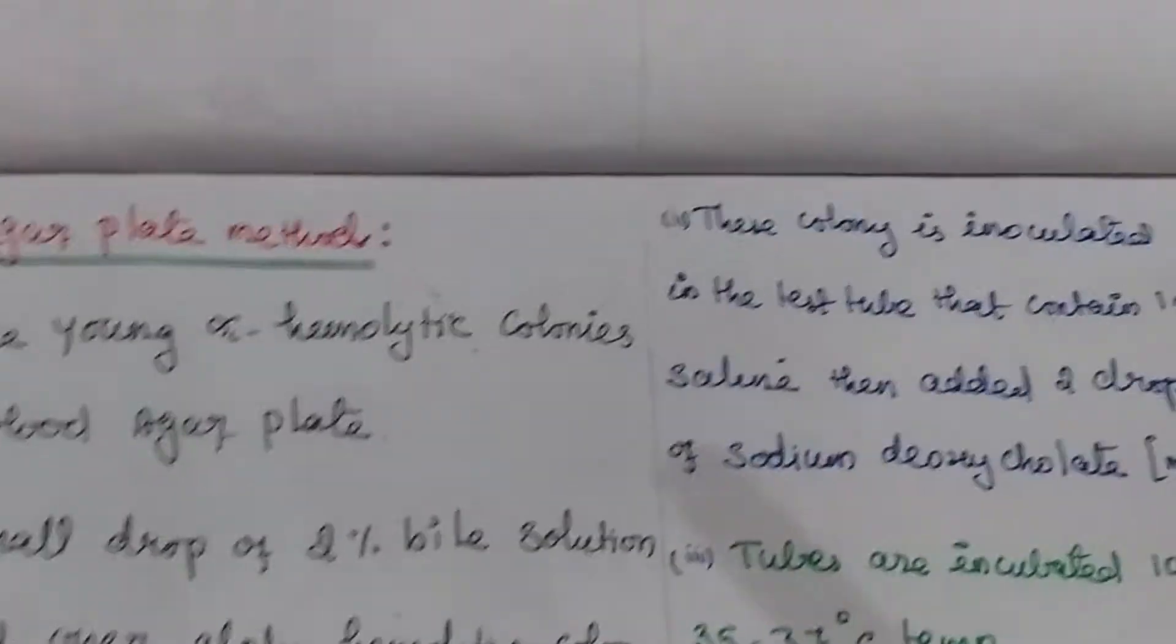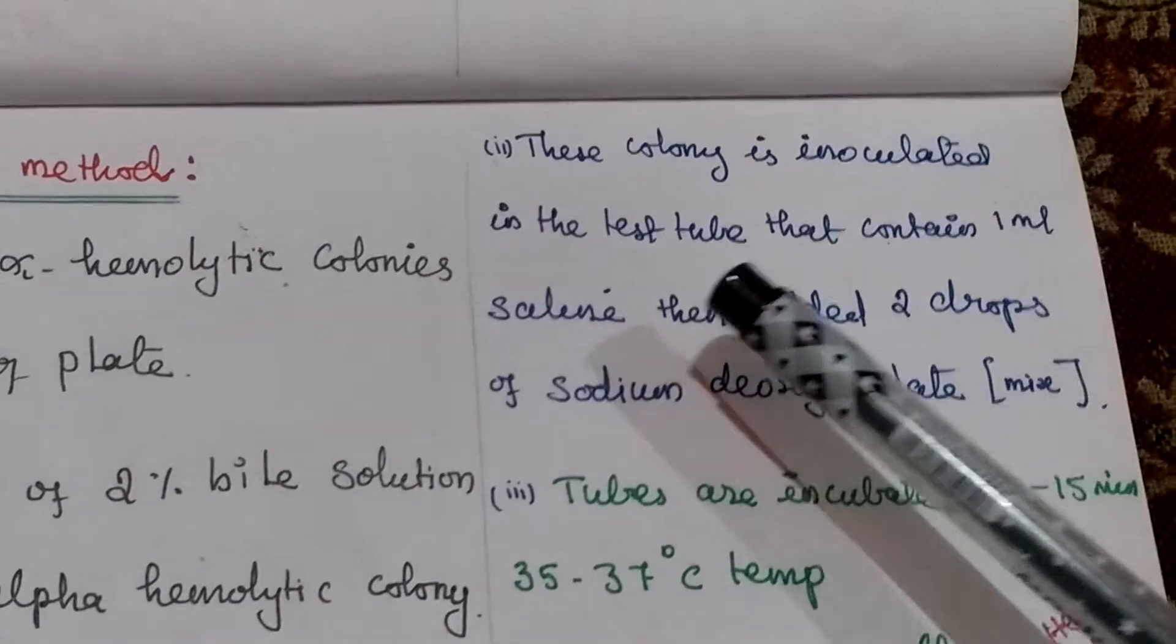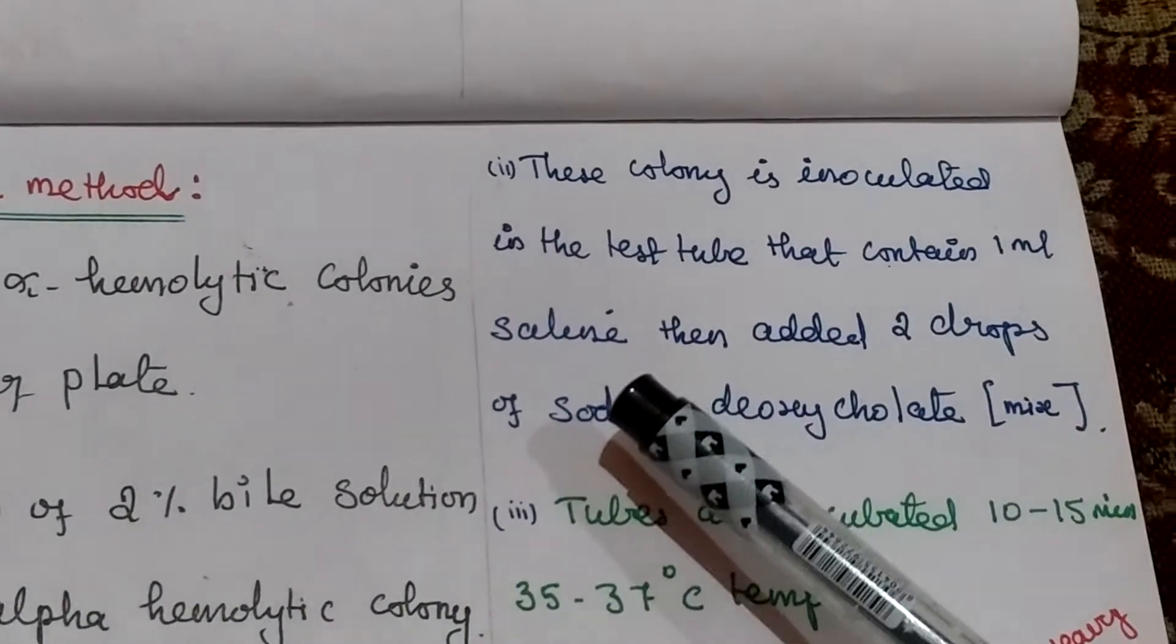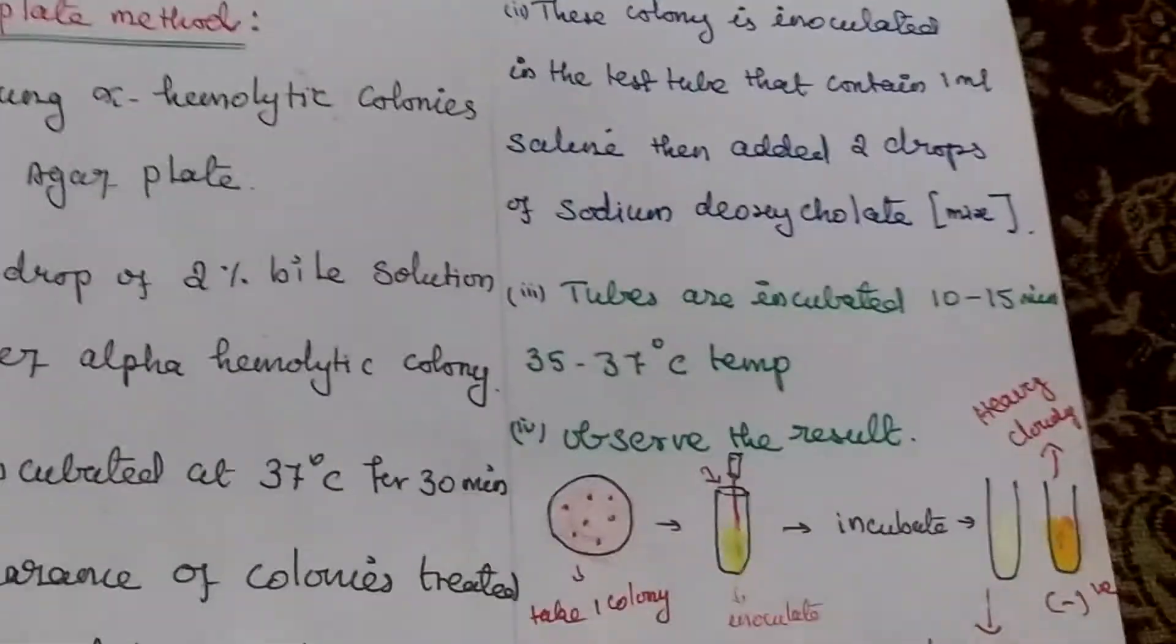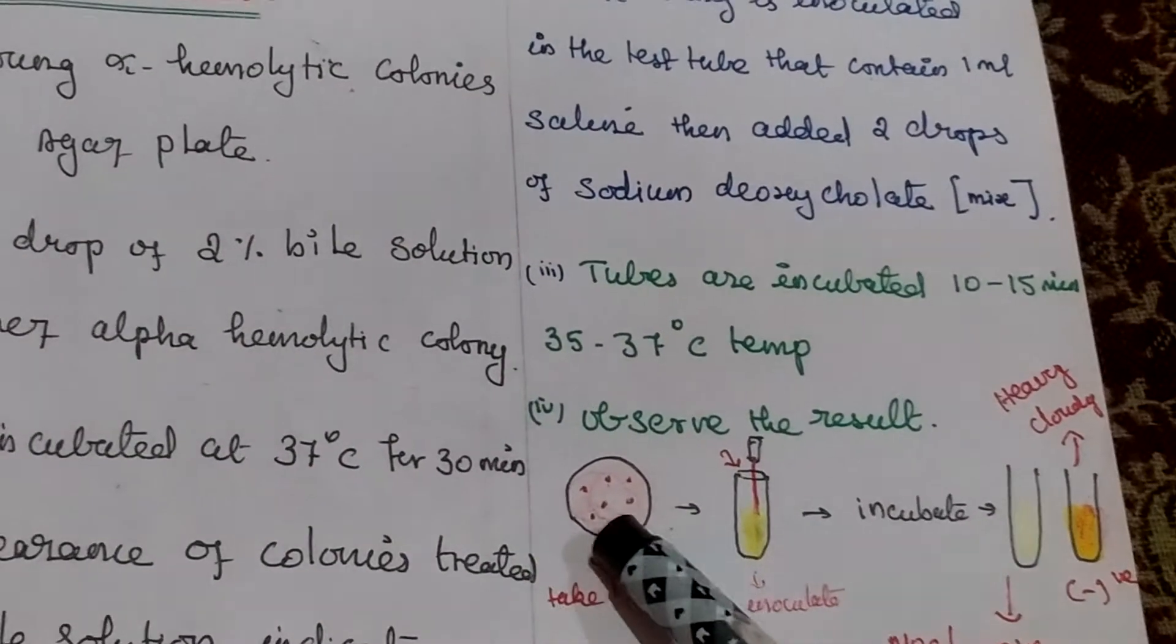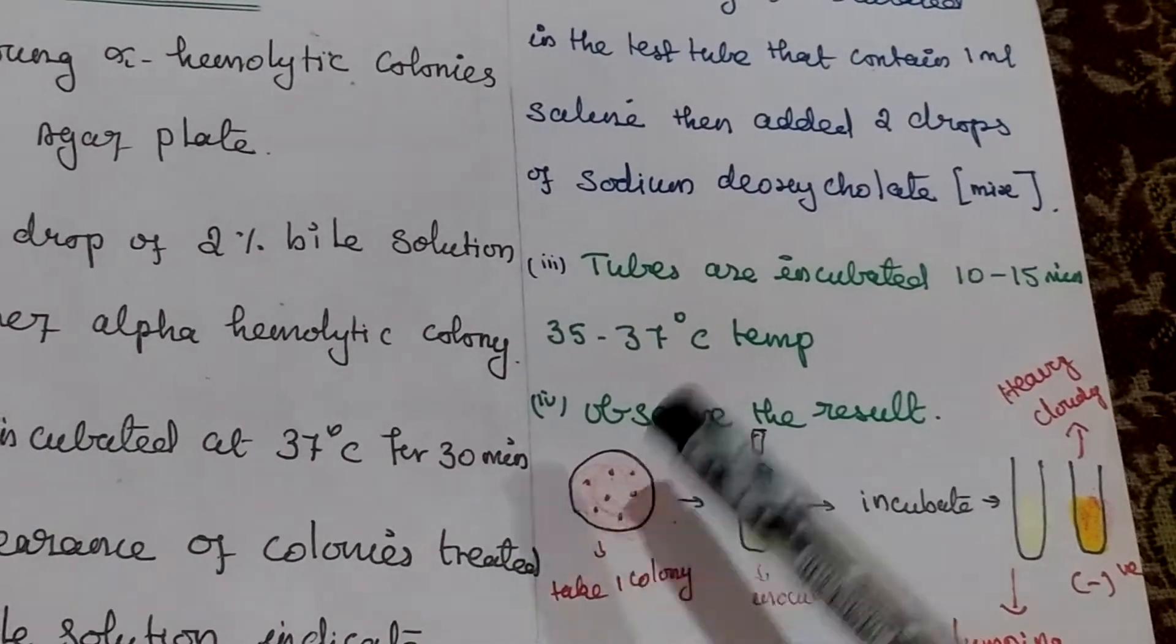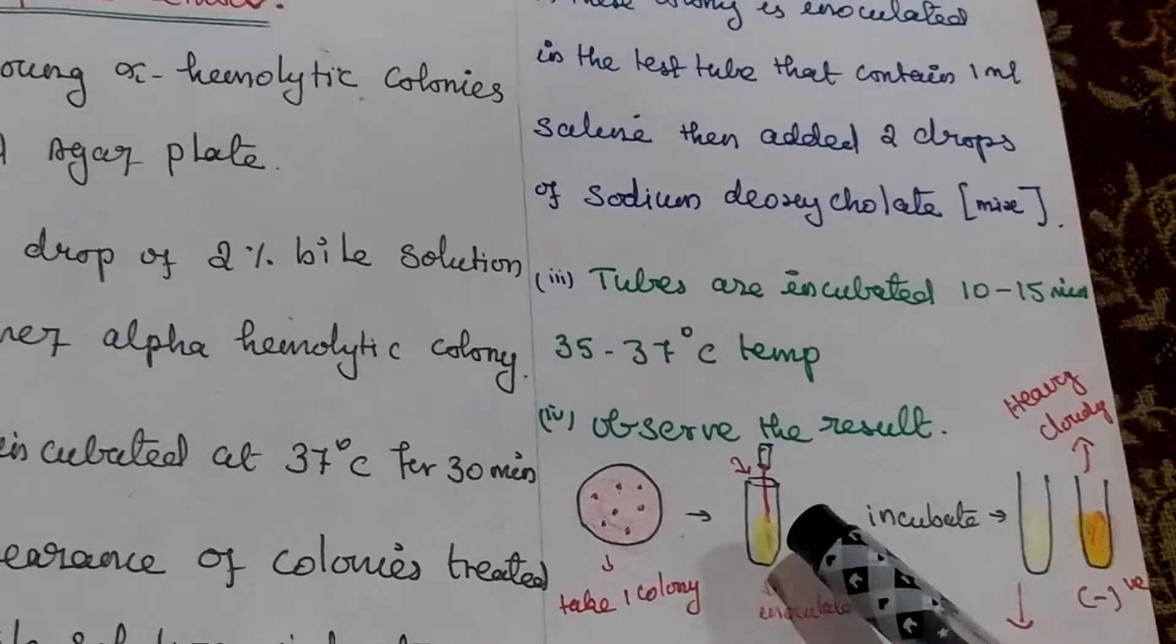After that this colony is inoculated in the test tube containing 1 ml of saline. Then add 2 drops of sodium deoxycholate. This one is blood agar plate. We will take one colony and inoculate it to this test tube.